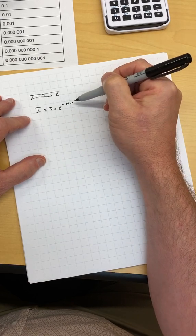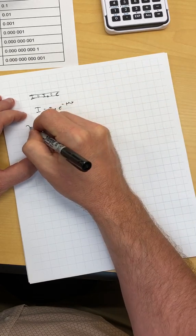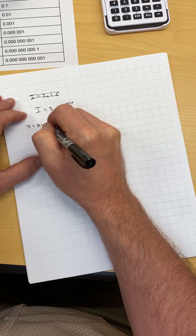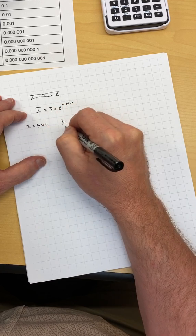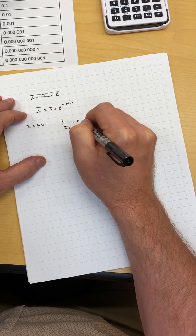So when x is equal to the half value layer, I over I naught is equal to 0.5.